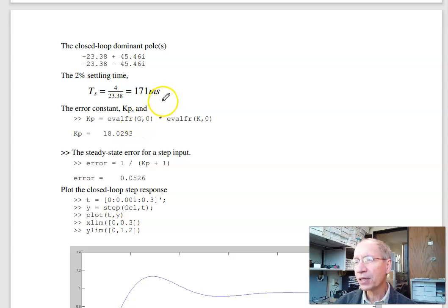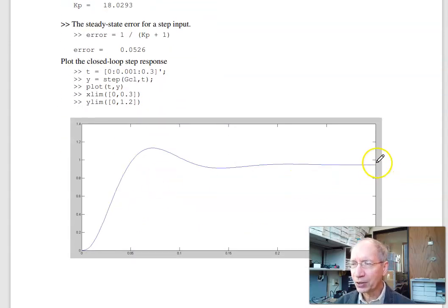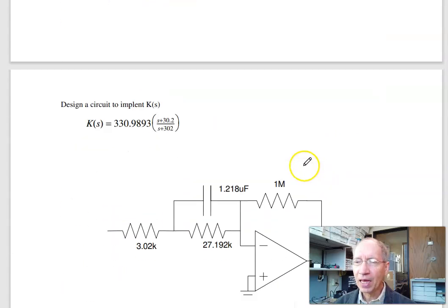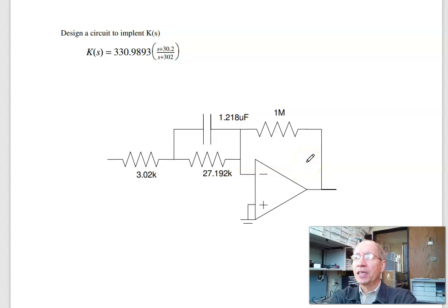So notice with lead compensator, I get a faster system, better tracking, only 5% error. And that shows up in this graph. Here is one. I only missed by 5%. And the last problem is design a circuit to implement k(s).